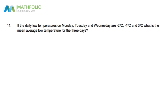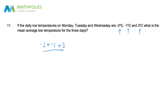If the daily low temperatures on Monday, Tuesday, and Wednesday are these three temperatures, what is the mean average low temperature for these days? We just add up these numbers and divide by three. It seems pretty simple, although we've got some negative numbers in there. We've got negative two plus negative one plus three, and then we're going to divide this by three because there are three numbers.